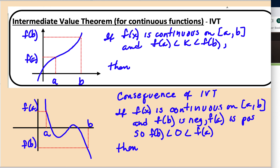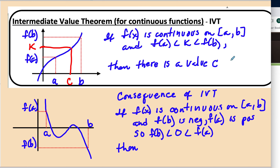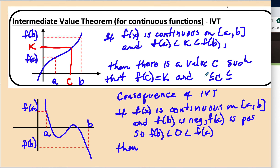Let's look at the conditions more specifically. First, f of x is continuous on the closed interval from a to b. There's going to be an intermediate value — I'll call it k — somewhere between the two y values. The Intermediate Value Theorem says the x that goes with k must be between a and b. So there is a value c such that f of c equals k, and c is in the interval between a and b.